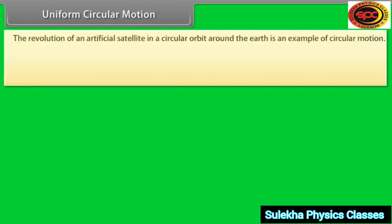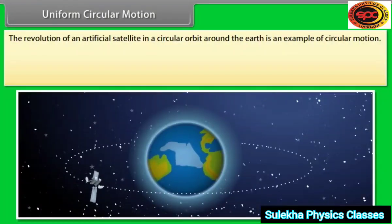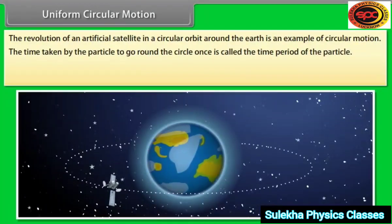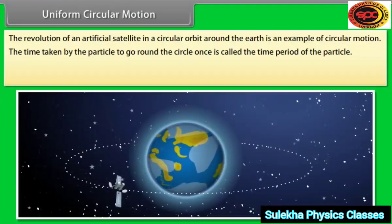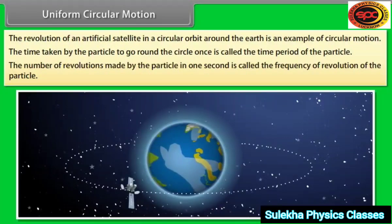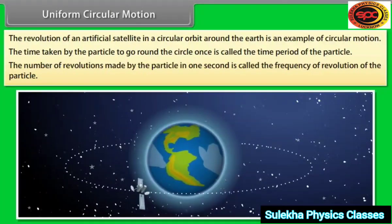The revolution of an artificial satellite in a circular orbit around the earth is an example of circular motion. The time taken by the particle to go round the circle once is called the time period of the particle. The number of revolutions made by the particle in one second is called the frequency of revolution of the particle.